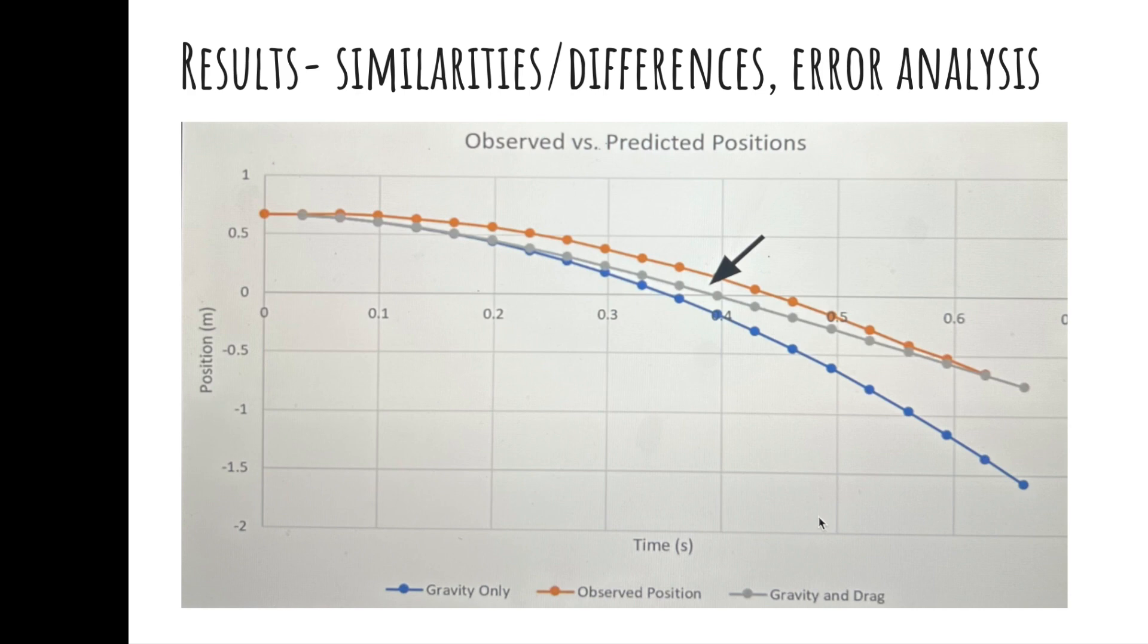Also notice how the gravity-only model displays the object at a much further position compared to the model that included drag force at the same time points. Remember that this is because drag opposes gravity, so the object's net force in real life going downwards is smaller and it is falling at a slower rate, so it does not move as far in the same amount of time.